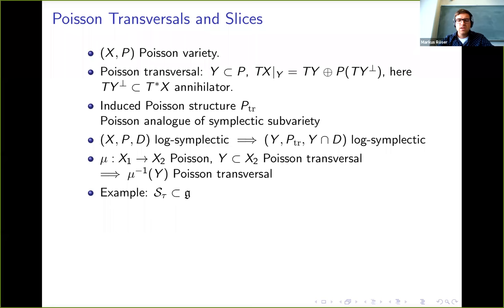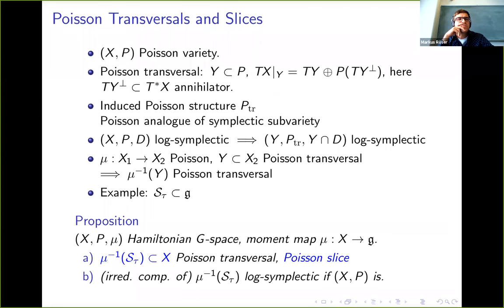In other words, if we take a Hamiltonian G space with moment map μ to g, this will be a Poisson map, then automatically the pre-image of this Slodowy slice will be such a Poisson transversal. Therefore it comes with a natural Poisson structure. If the space we started with was log-symplectic, then also the Poisson slice will be log-symplectic or its irreducible components will be log-symplectic.